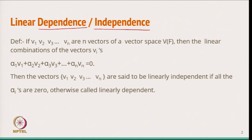Suppose I have n number of vectors coming from a vector space V over a field F. I am choosing V1, V2, V3, ..., Vn as the n vectors of that vector space. Then I take the linear combination: alpha_1 * V1 + alpha_2 * V2 + alpha_3 * V3 + ... + alpha_n * Vn = 0, where each alpha_i belongs to the field F.